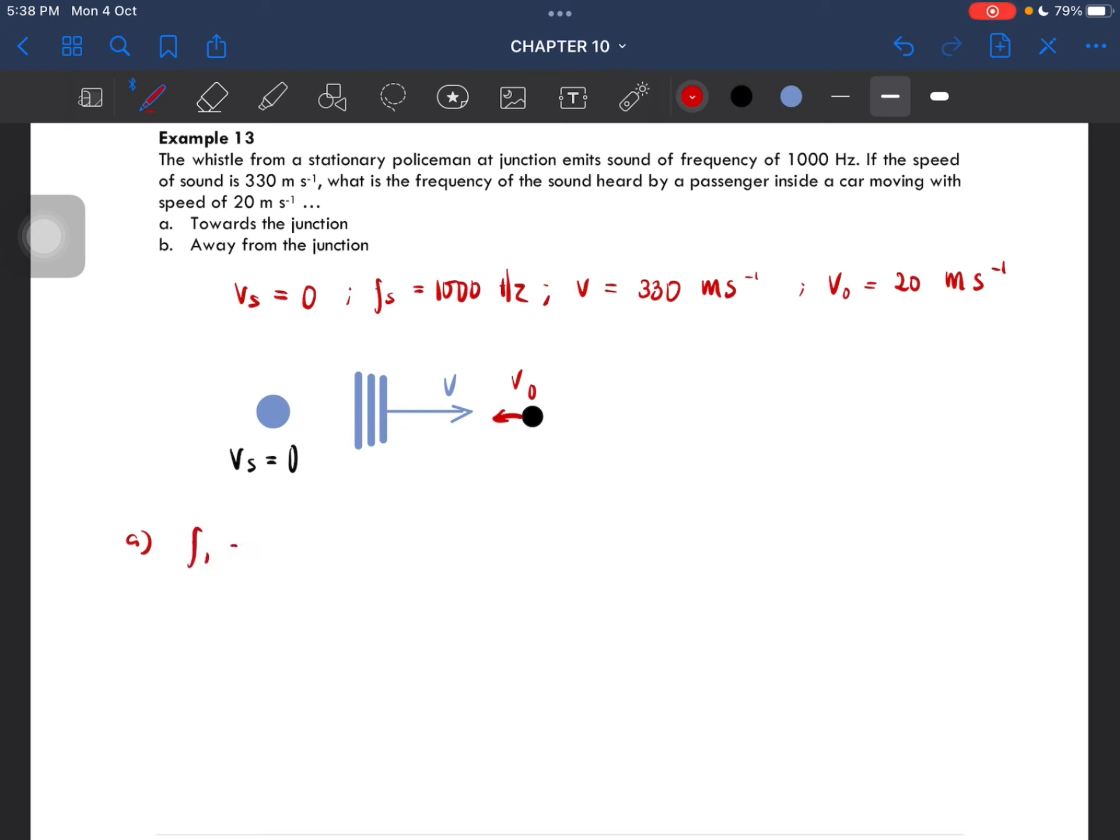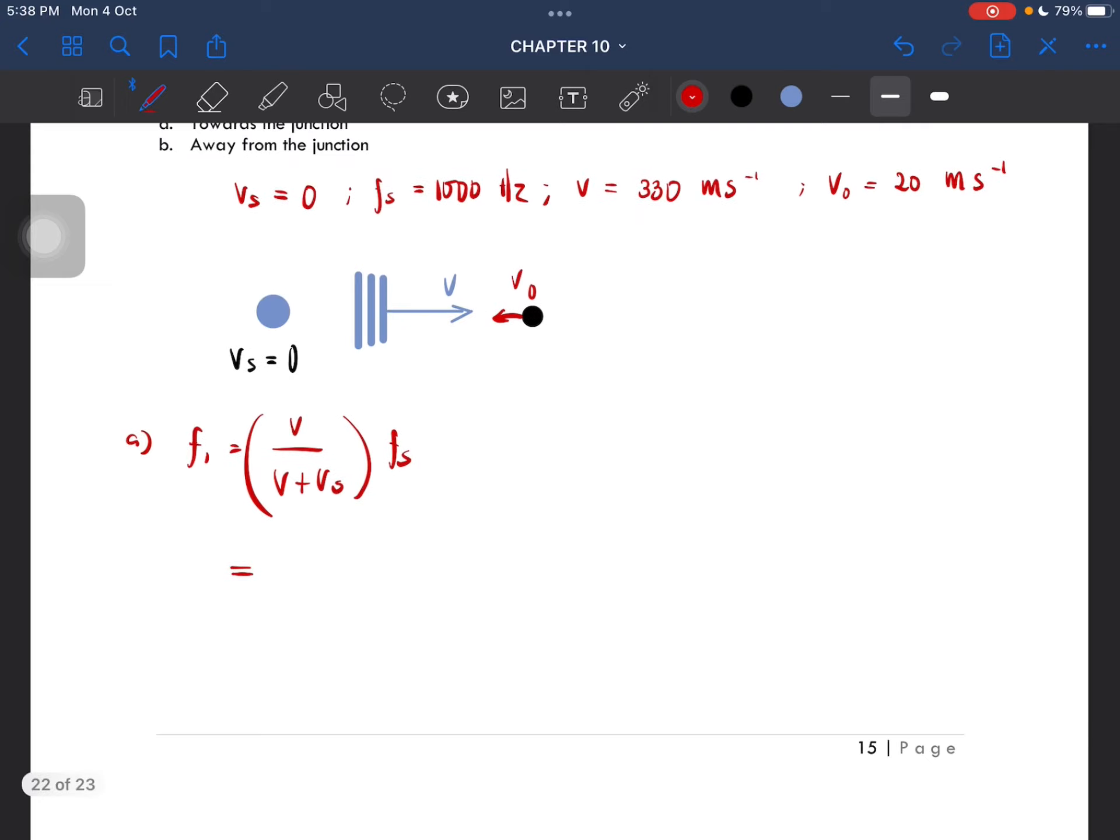Since they are in opposite directions, the speed of sound and the observer's speed, we're gonna use plus. So v over v plus vs, fs. So this is 330 plus...